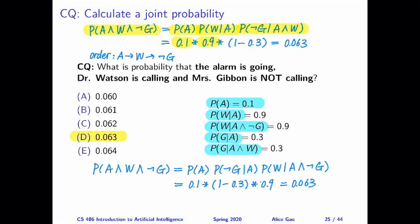Well, fortunately, we have something quite similar. We have the probability of G given A and W. So if you remember your probabilities, then you might realize that the probability of G given A and W plus the probability of not G given A and W, they sum to 1.